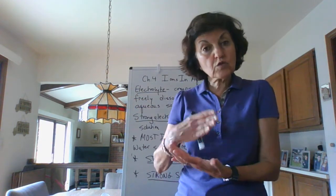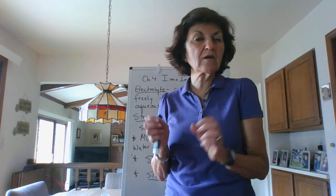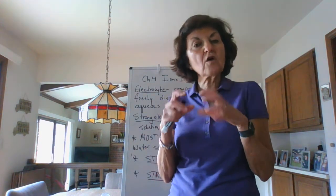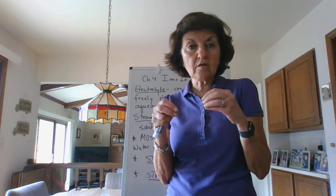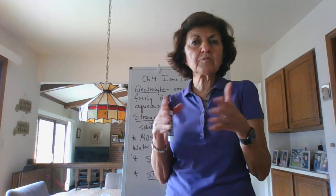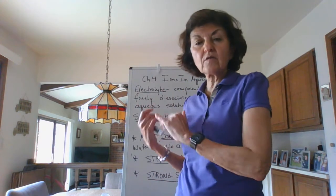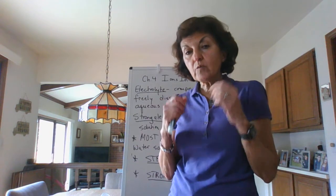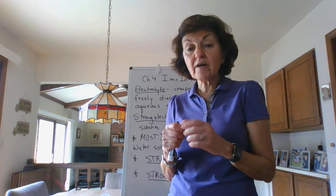Now there's a difference between a strong electrolyte and a weak electrolyte. A weak electrolyte doesn't dissociate very much — it dissolves, but it does not produce a lot of ions. Basically, the equilibrium is more on the left rather than on the right, so you don't produce a lot of ions with a weak electrolyte. It dissolves, but you don't produce a lot of ions.